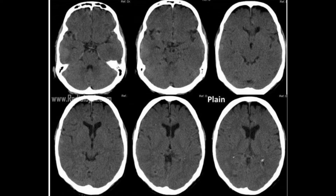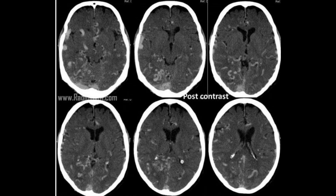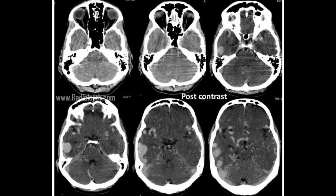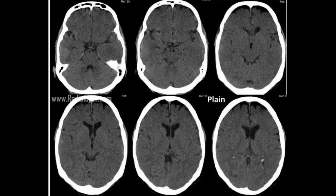Plain CT shows an ovoid hyperdense lesion in the lateral half of the right temporal lobe. After IV contrast, this turned out to be a large vascular nidus with mild perilesional edema around it. More prominent right sigmoid and transverse sinuses are also noted. In addition, multiple vascular collaterals are seen diffusely in the supratentorial and infratentorial brain, more pronounced in the right cerebral hemisphere. There is no evidence of mass effect or midline shift.